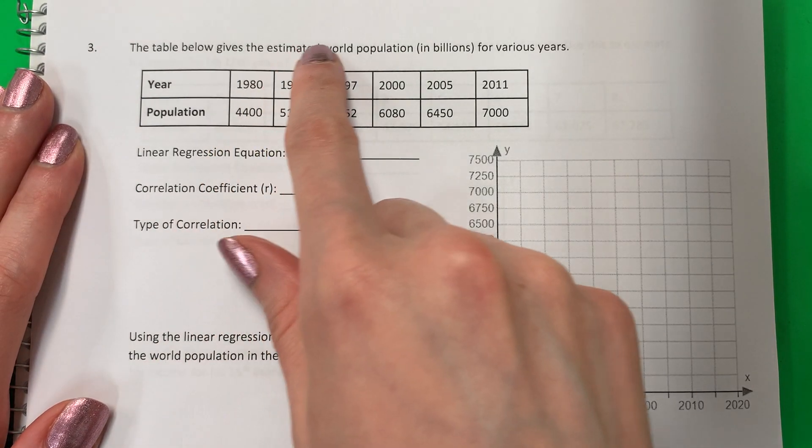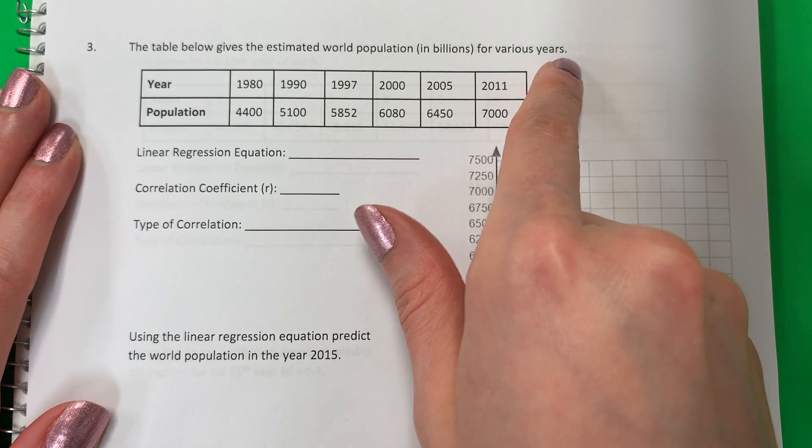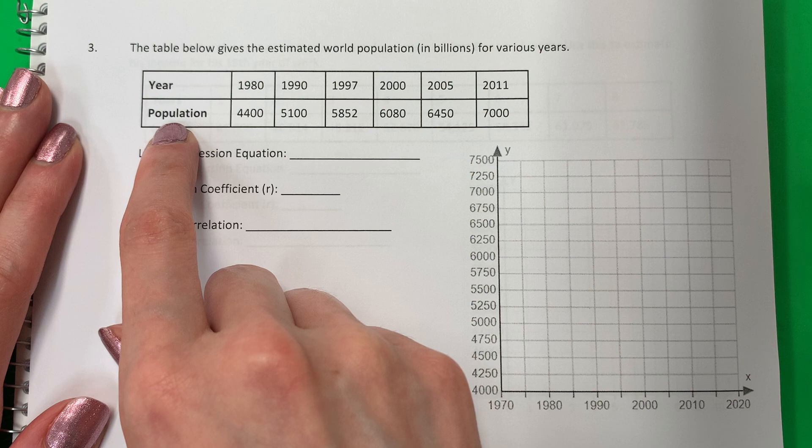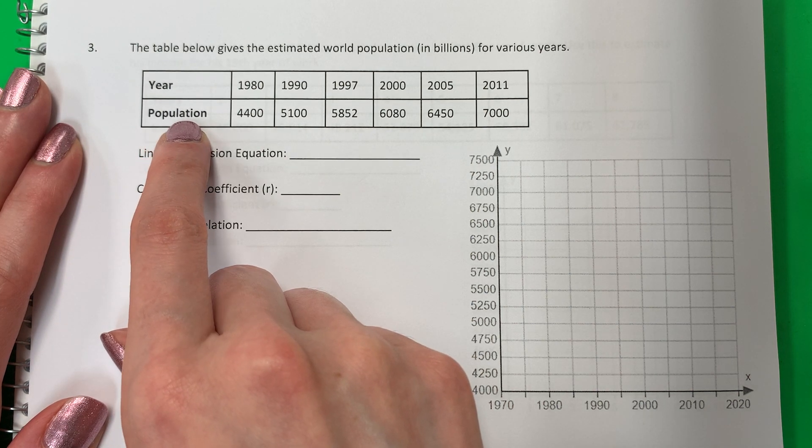The table below gives the estimated world population in billions for various years. So I have year and the population, tengo los años y el número de personas, el populación.